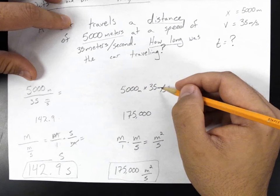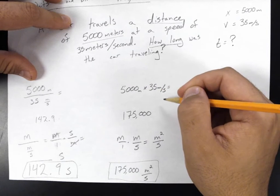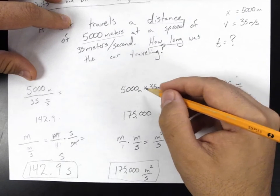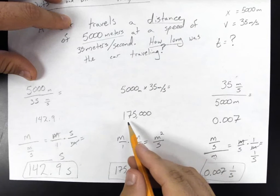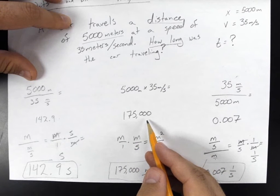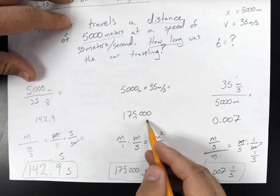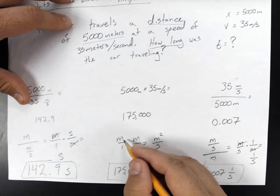Let's go to this one. 5,000 meters times 35 meters per second equals 175,000. Now let's look at the units. We've got meters, meters over 1, times meters per second.